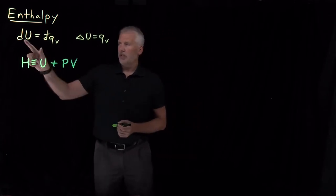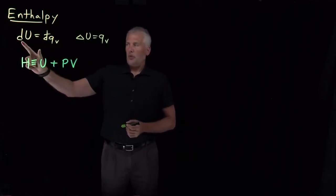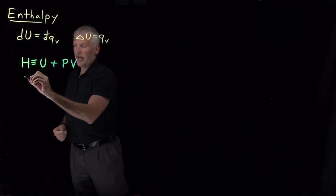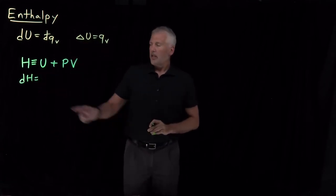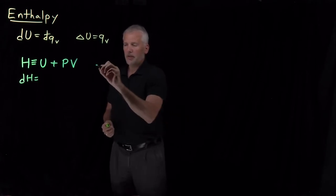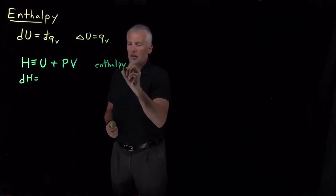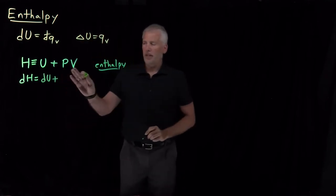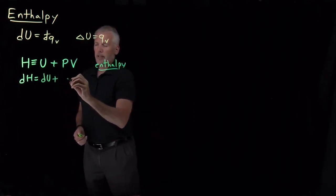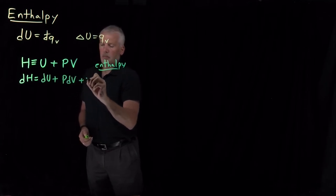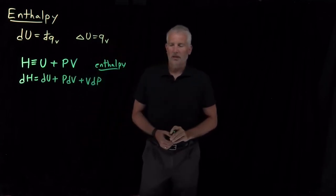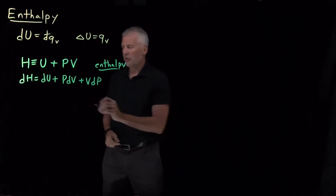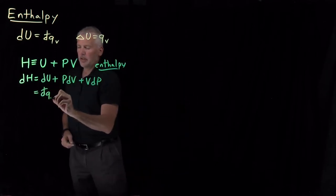With that definition, we can ask what is the differential change in enthalpy. If I take the differential of both sides of the equation, dH on the left, on the right I have dU, and then the differential of P times V. Using the product rule, that gives P dV plus V dP. We know some things about these terms: dU from the first law is equal to dQ plus dW.